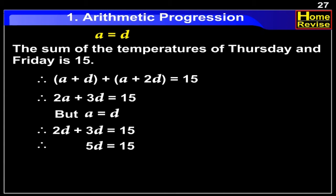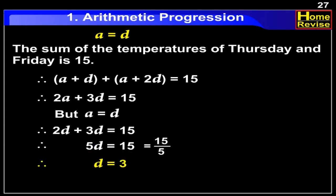Therefore, 5D is equal to 15. Therefore, D is equal to 15 divided by 5. Therefore, D is equal to 3. If D is equal to 3, then A is also equal to 3.